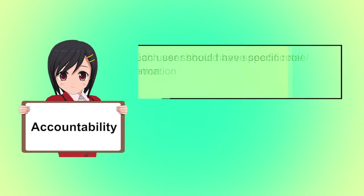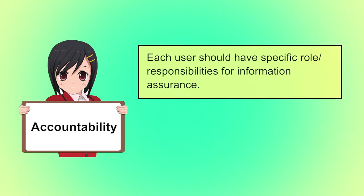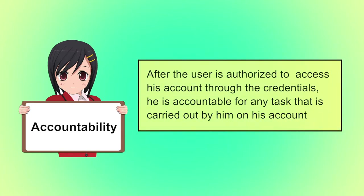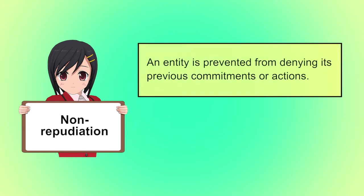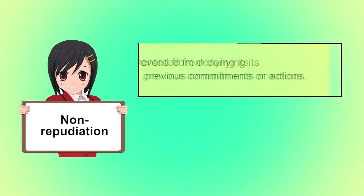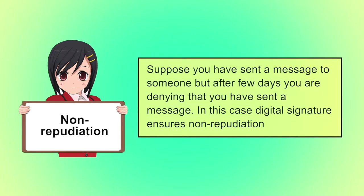Accountability focuses on ensuring that any actions taken by an entity can be traced uniquely to that entity. For example, after the user is authorized to access his account through credentials, he is accountable for any task carried out on his account. The last is non-repudiation — the assurance that someone cannot deny something. A legal document typically requires witnesses to signing so that the person who signs cannot deny having done so. For example, suppose you sent a message to someone but later deny it — in this case, the digital signature ensures non-repudiation.